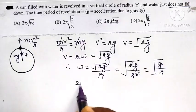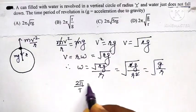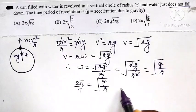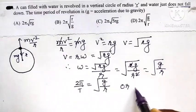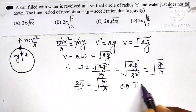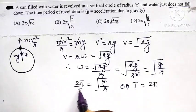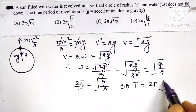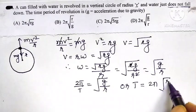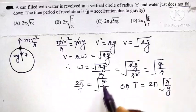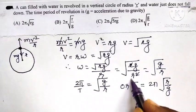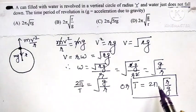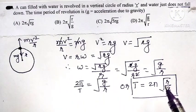But omega is equal to 2 pi by T. T is the time period, is equal to under root of g divided by r. Or the time period T that we have to calculate is equal to 2 pi. When the square root is taken to this side, then the term in denominator now comes in numerator and term in numerator comes in denominator. So, the time period of revolution of that bucket should be 2 pi under root of r by g.